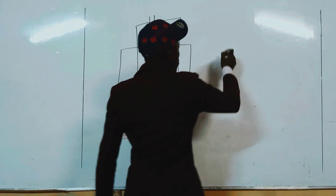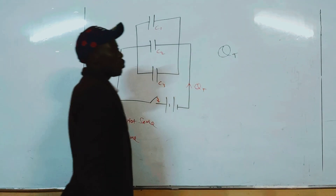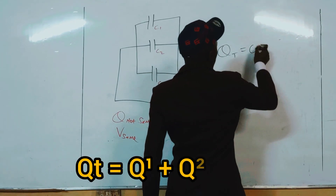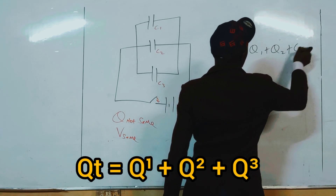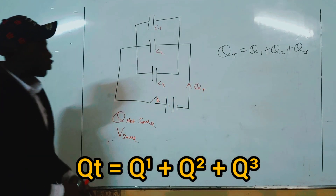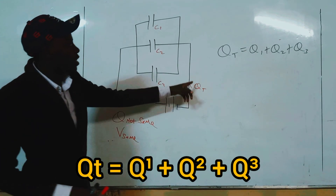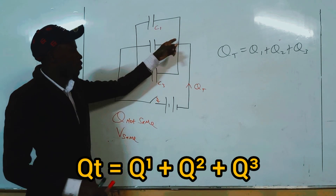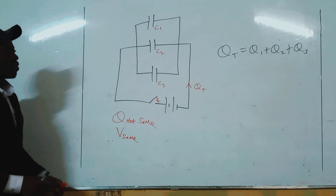It is right to say total charge QT is equal to Q1 plus Q2 plus Q3. In other words, the total charge from the cells equals the charge through C1 plus the charge through C2 plus the charge through C3.